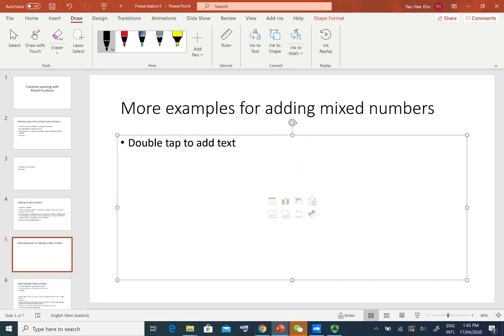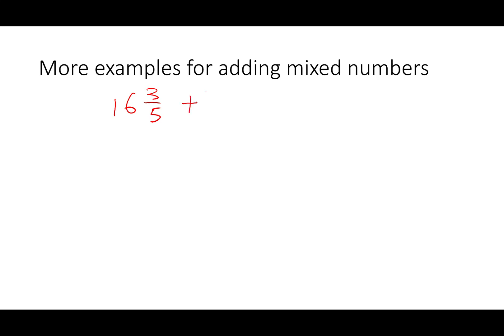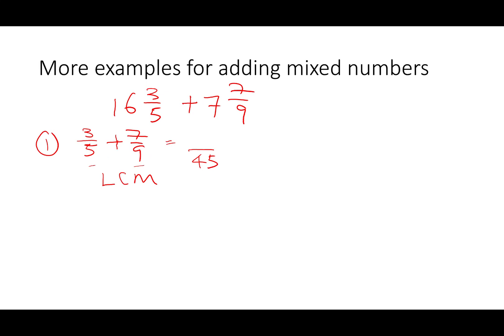What happens if your denominators are different? For example, sixteen and three-fifths plus seven and seven-ninths. We add the fractional part first: three-fifths plus seven-ninths. Because the denominators are different, we need to find the lowest common multiple. The LCM for five and nine is forty-five, so we get twenty-seven over forty-five plus thirty-five over forty-five, which equals sixty-two over forty-five.